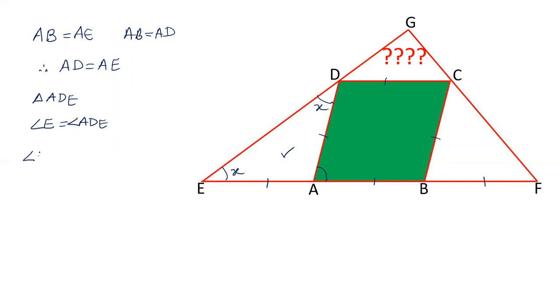And therefore angle BAD will be 2X. That is exterior angle property. Angle BAD equals angle E plus angle ADE, so that will be X plus X, that is 2X.